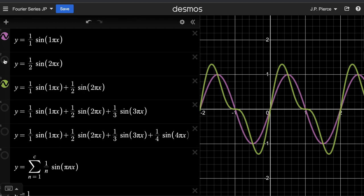And so I'm going to remove this white curve now. And you can see what we're going to do is follow this pattern where we're adding 1 over 1 sine 1 pi x plus 1 over 2 sine 2 pi x.